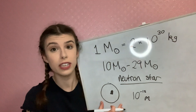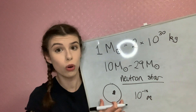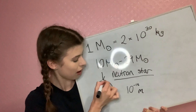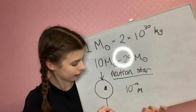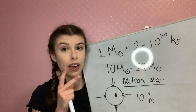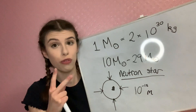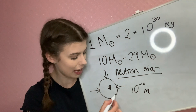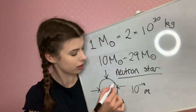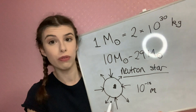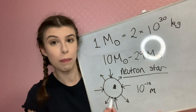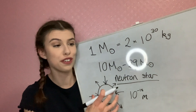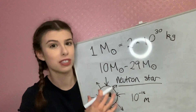Gravitational forces are obviously acting on this neutron star, so the force of gravity acts radially inwards. However, a force called neutron degeneracy pressure acts outwards. The inwards forces are balanced by the outward forces, so the neutron star is in a stable state.